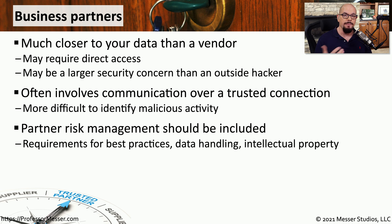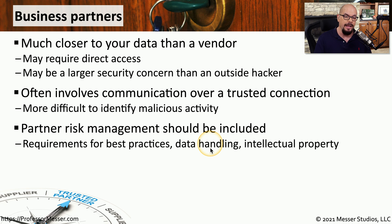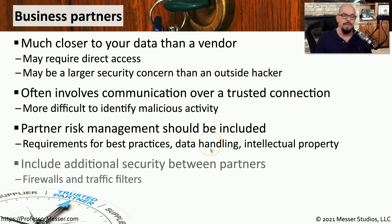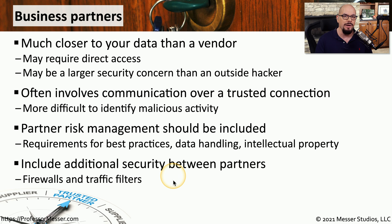Because of this, there should be policies in place to handle risks. We should understand the best practices for the connection between ourselves and the business partner, the best way to handle data between the two organizations, and how intellectual property should be handled. In a configuration like this, it's not unusual to include a firewall or some type of filter to manage exactly what traffic can be transferred between the two networks.